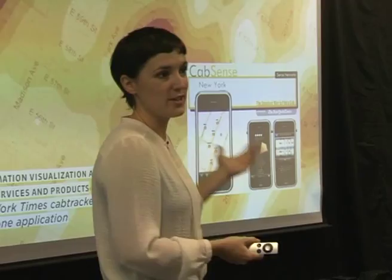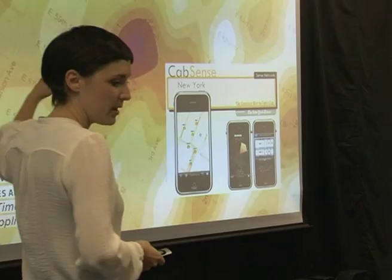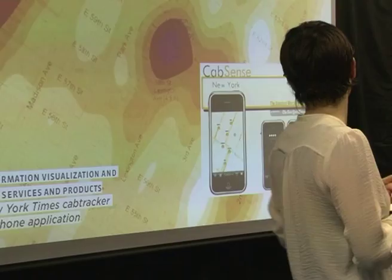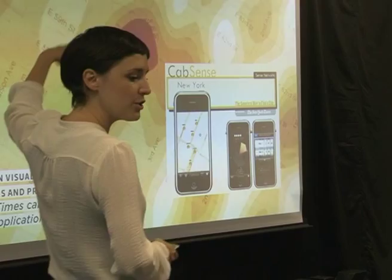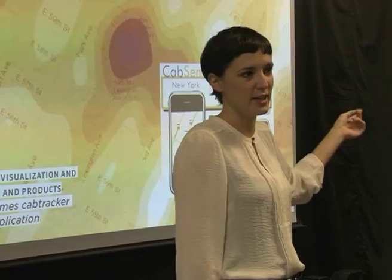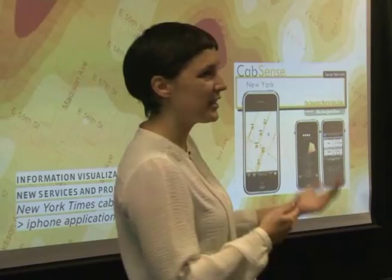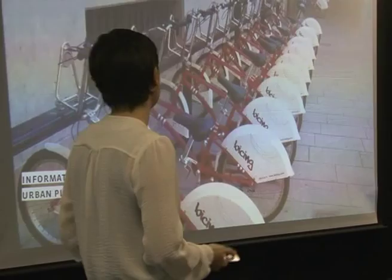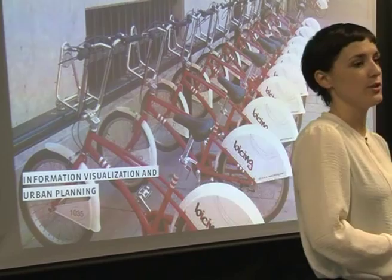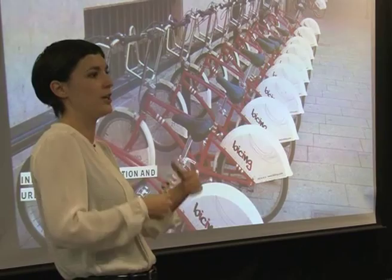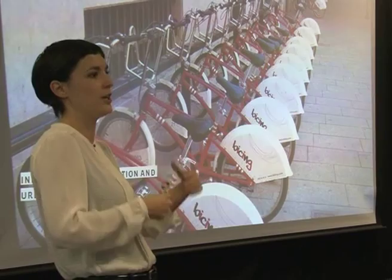Beyond journalism, software products and applications based on information visualization will also develop. For example, a New York Times map showing the density of taxi cabs in New York became an iPhone application that tells you which corner gives you the best chance of getting a cab — which seems nearly impossible in New York City even with an iPhone app. And then of course there's urban planning: visualization software can help planners manage data on traffic, pedestrians, and public transportation to plan better cities.